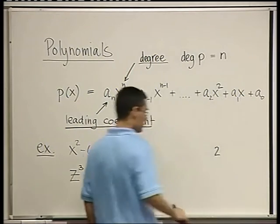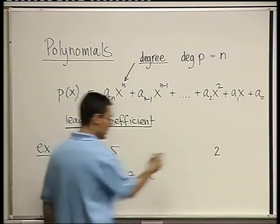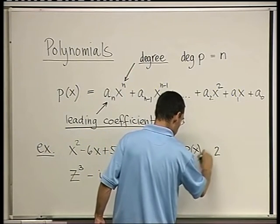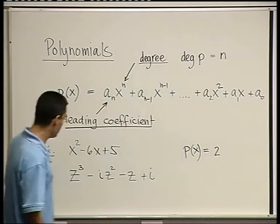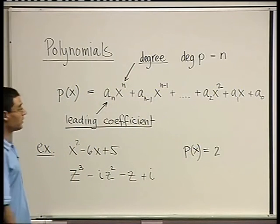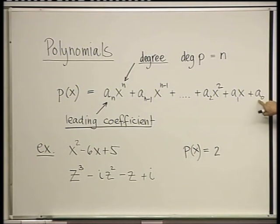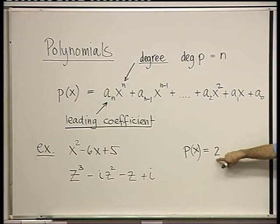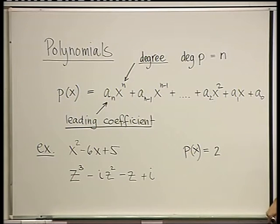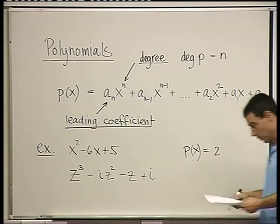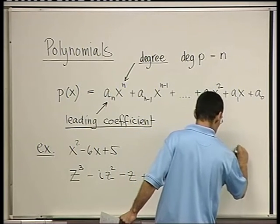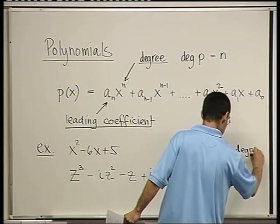Here are some more examples. P of x equals 2 is a polynomial. It's a polynomial of degree 0, because it only has this often called free coefficient, the coefficient of x to the power 0. So this is a polynomial of degree 0.